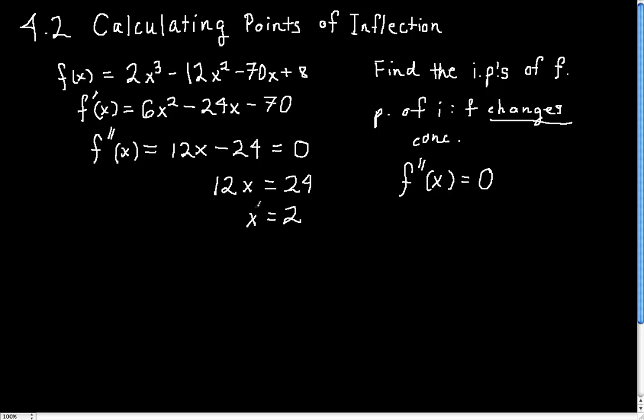We need f to change concavity for this to be classified as a point of inflection. So how do we know that f changes concavity here? Well, if we look to the left of x equals 2 in the second derivative, we will get something negative. For example, if we plug in x equals zero into the second derivative, we will get negative 24.